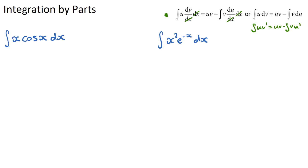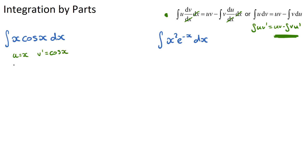We need to identify what u is and what v' is in our question. u needs to be something that is easily derivable. For example, with x and cos x, we want u to be easily derivable and v' to be easily integrable. This matters because on the right-hand side we need to integrate v·u', and ideally u' should be a constant so we can just integrate v with a constant attached. If u' is not a constant, we'll need another integration by parts.